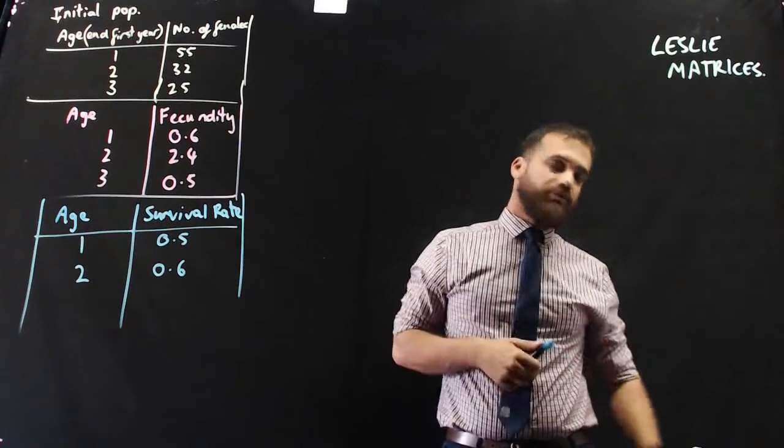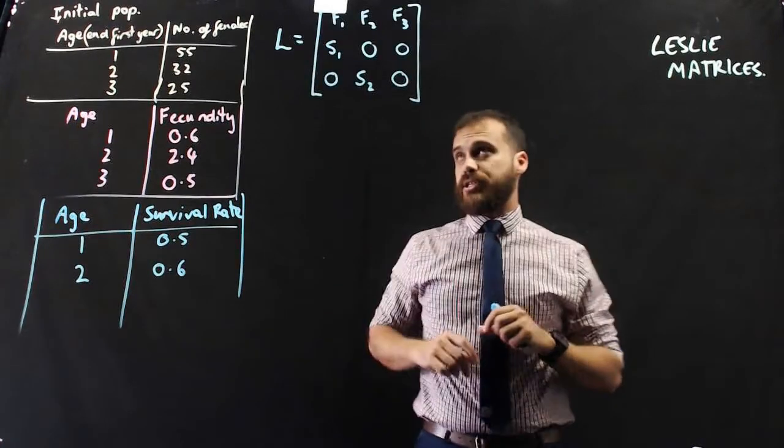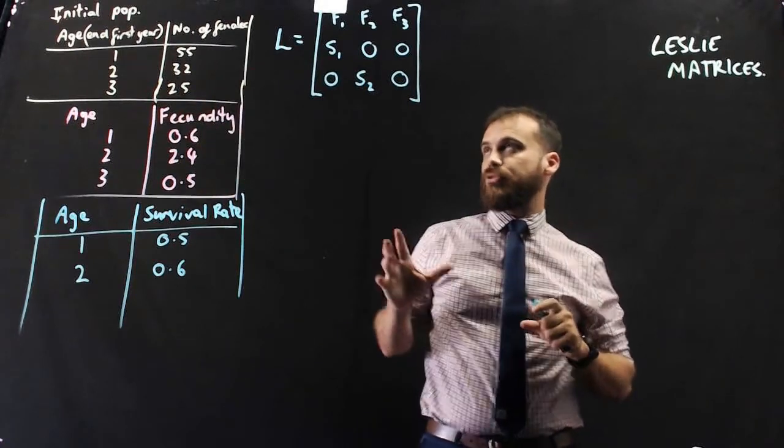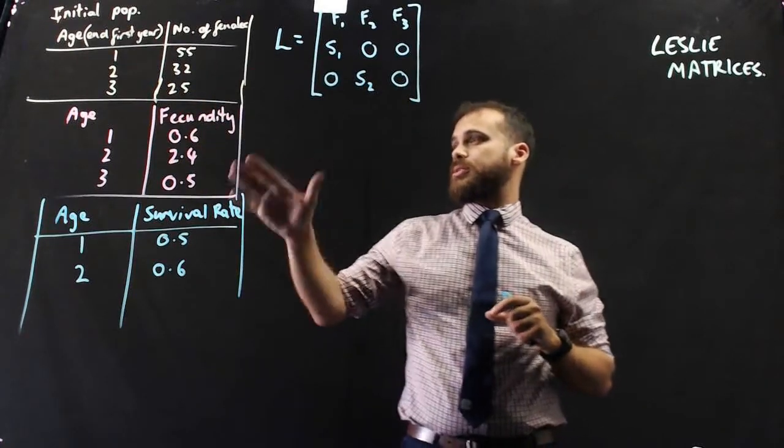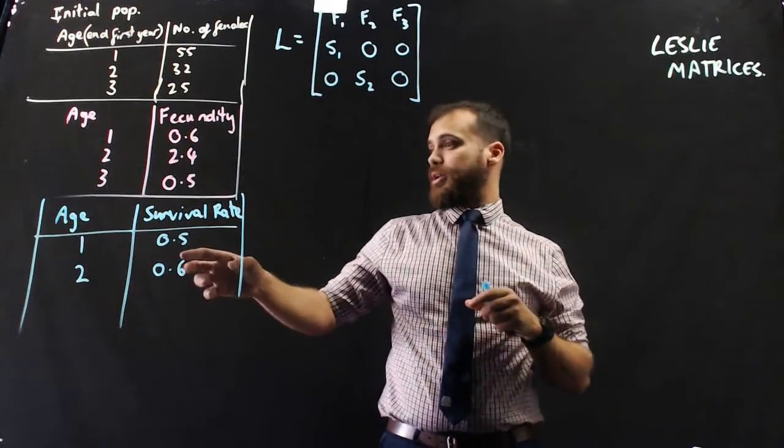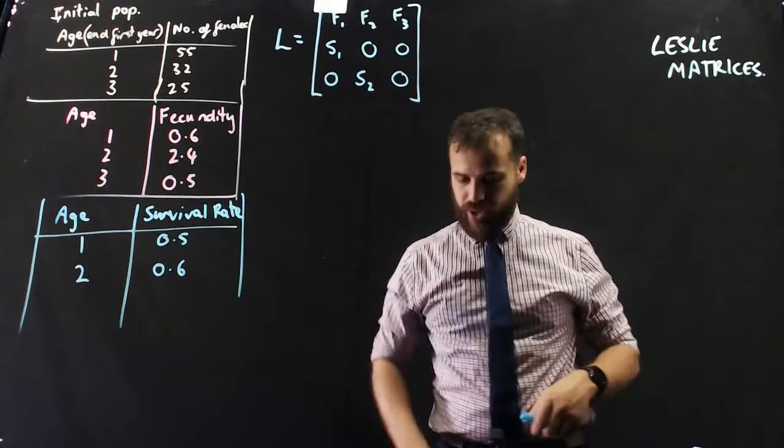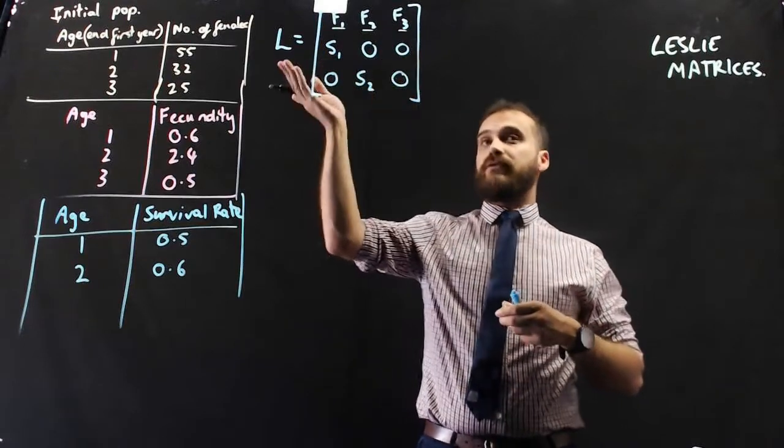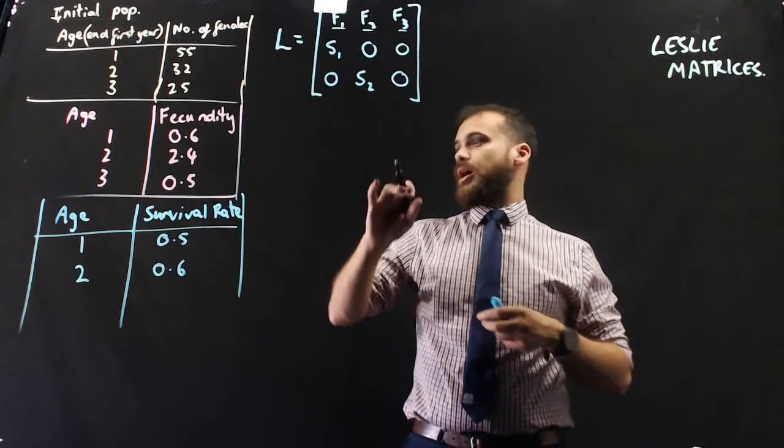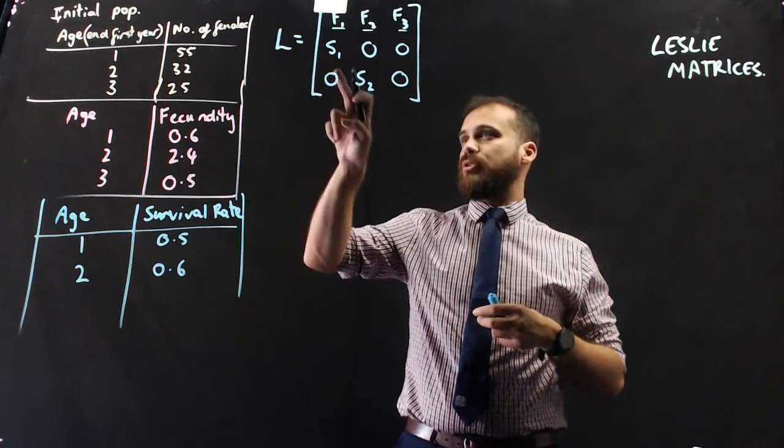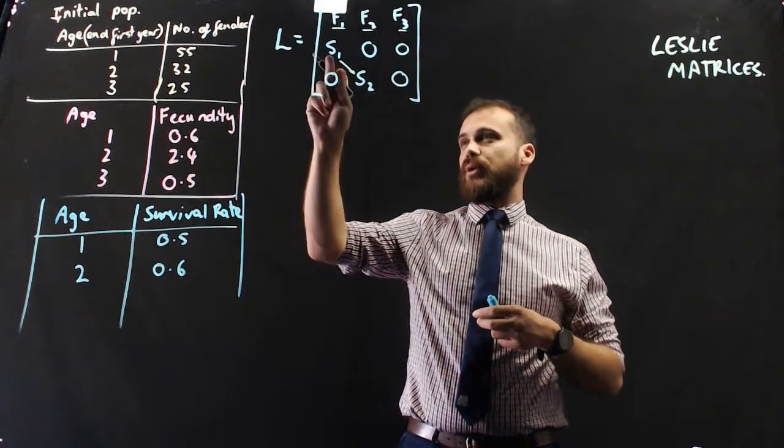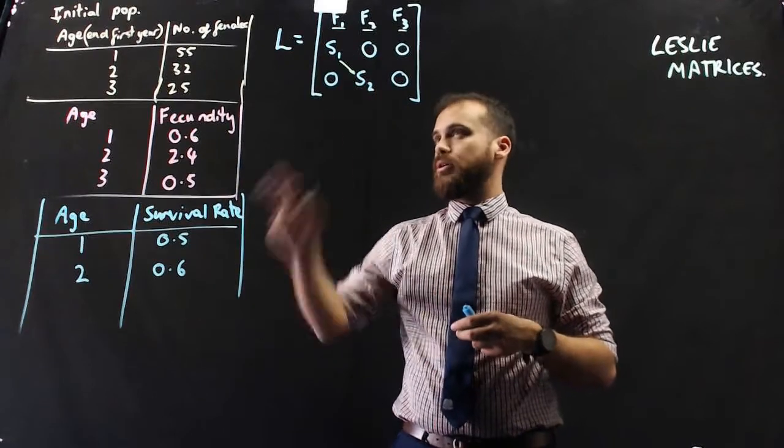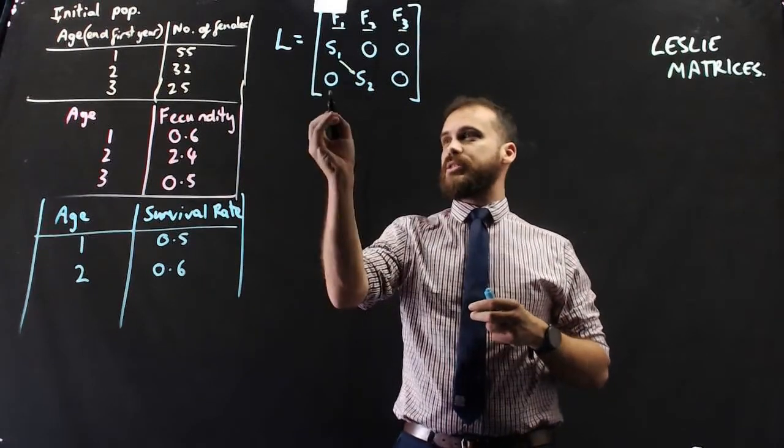With all of this information we can start to build our Leslie matrix. Here's what a Leslie matrix looks like. Ignore the initial population. The initial population doesn't go in our Leslie matrix. What does go in there is fecundity, or reproduction, and survival rate. Notice here the fecundity rates are going to go along the first row, and the survival rate is going to go along what we call the sub-diagonal. The rest of the numbers are just zeros.